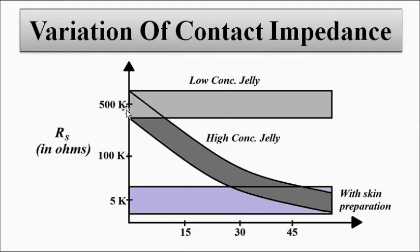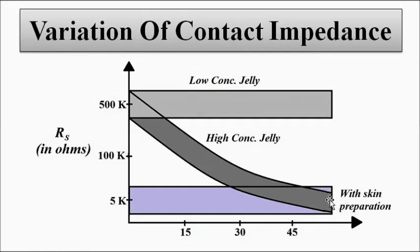For the high concentration jelly, initially the impedance is around 500 kilo-ohms, but then it decreases gradually and at around 60 minutes it reaches approximately 5000 ohms. For the skin preparation or skin abrasion case, the impedance is constant right from t equals zero and remains at 5000 ohms for the entire duration of one hour or more. So the low concentration jelly has a constant but high contact impedance, the skin-prepared case has a constant low impedance, and the high concentration jelly starts high then decreases gradually to 5000 ohms.